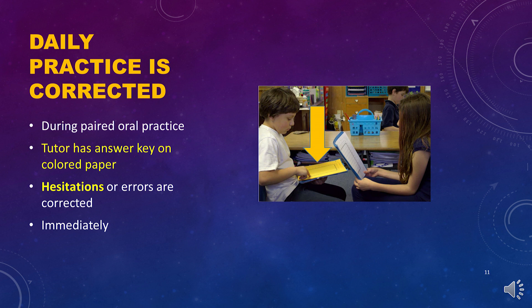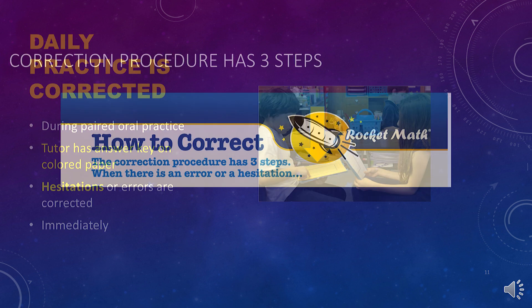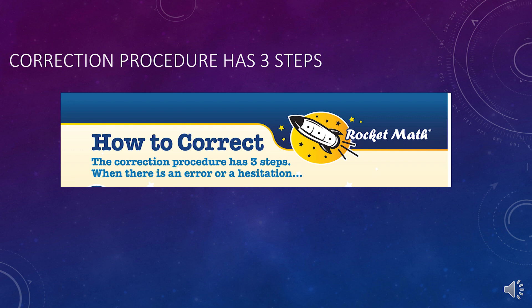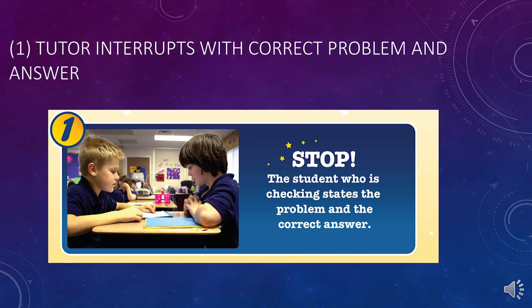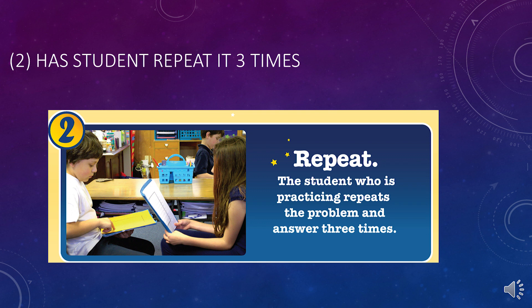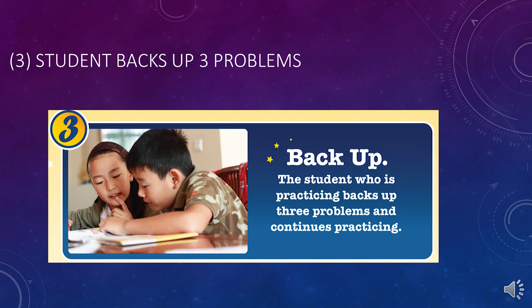The daily practice is corrected practice, and it's essential that the tutor either knows the answers or has the answer key packet on colored paper turned to the matching page. While the student is practicing, all hesitations or errors are immediately corrected by the tutor. Once a student has read the problem aloud, they should have already thought of the answer, so no hesitation is allowed. If the student hesitates or makes an error, the tutor follows a specific three-step correction procedure. One, the tutor interrupts to state the problem and the correct answer. Two, the tutor has the student repeat the problem and the correct answer three times. Three, the student backs up three problems on the worksheet to give it another try.